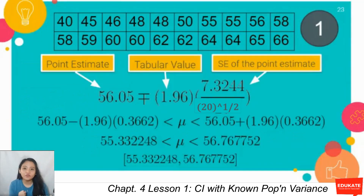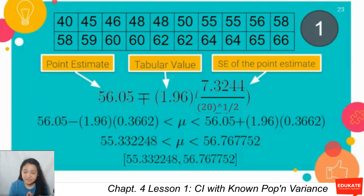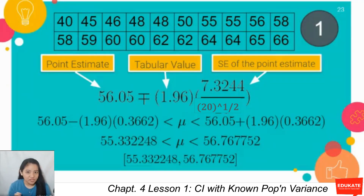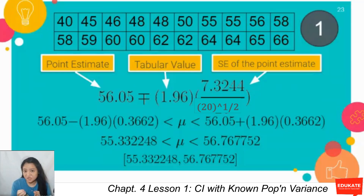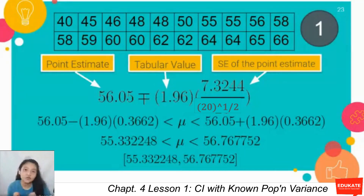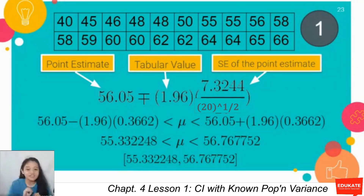Now we build our confidence interval estimate: 56.05 plus or minus 1.96 times (7.3244 over square root of 20). On the left side, 56.05 minus 1.96 times SE, and on the right side, 56.05 plus 1.96 times SE. This means we are 95% confident that the weight falls between 55.3325 and 56.7675 kilograms.